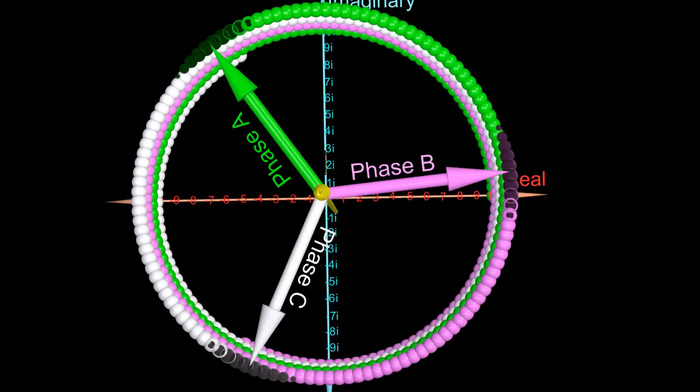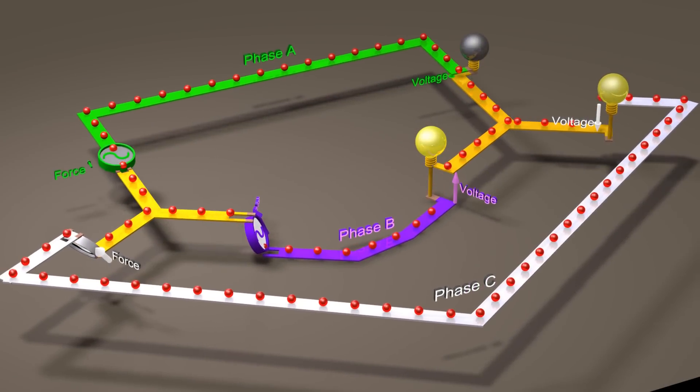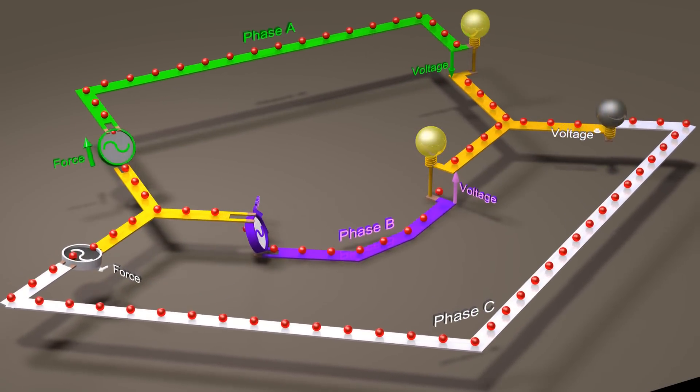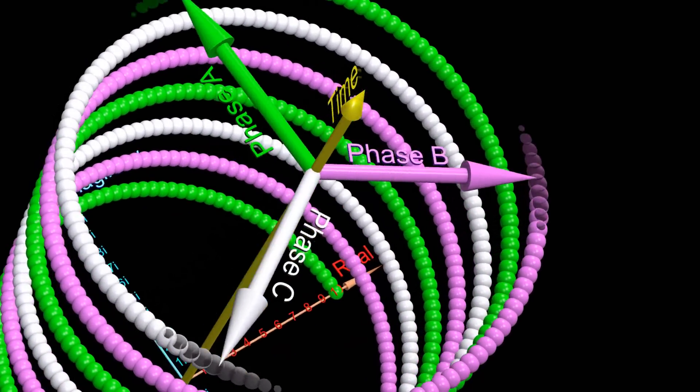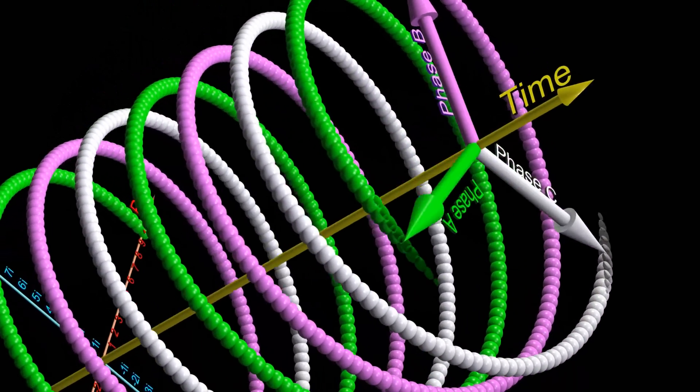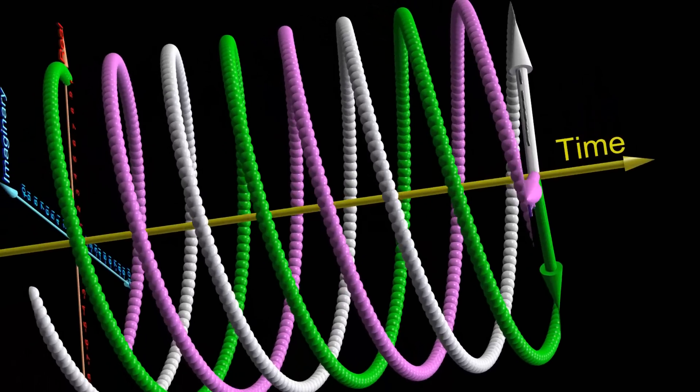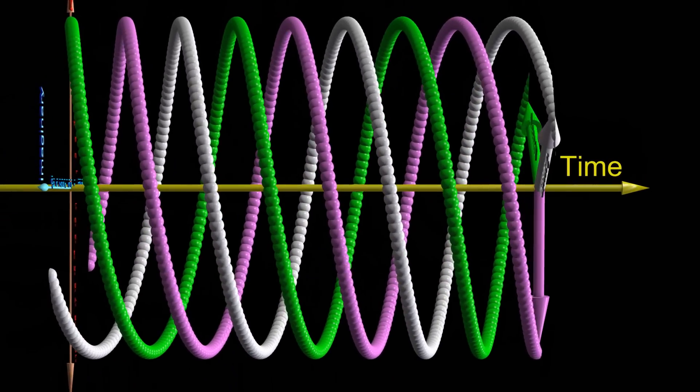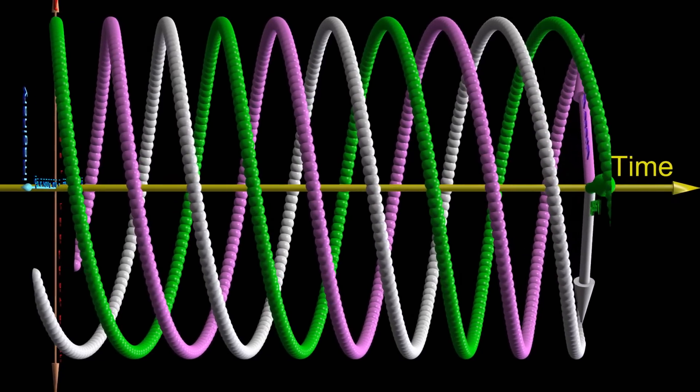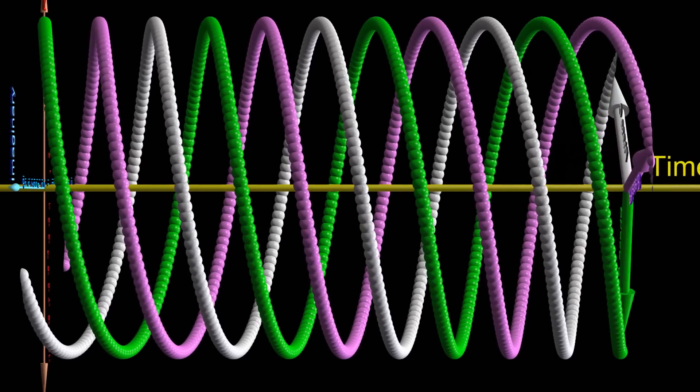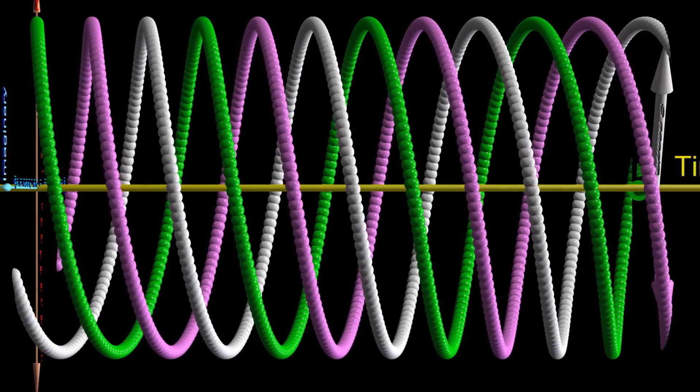Three-phase power consists of three AC voltages that are connected together. At each moment in time, each of the voltages is described by the real component of its vector in the phasor diagram. This creates three sine waves that are offset from each other by 120 degrees.